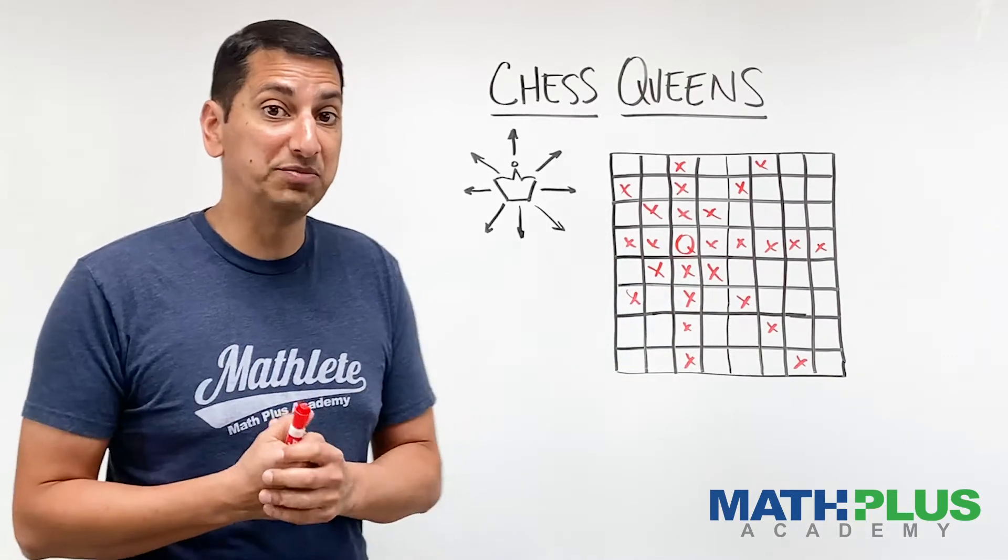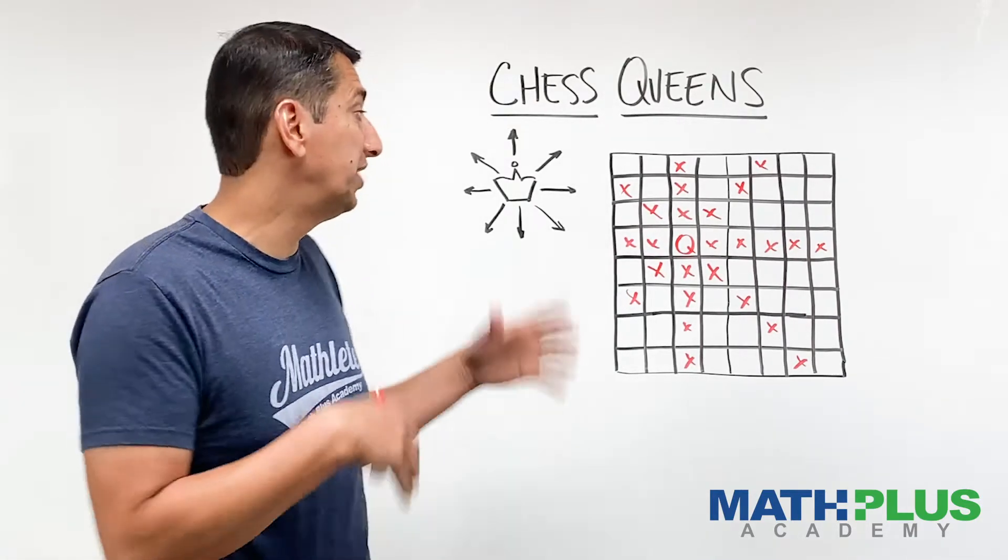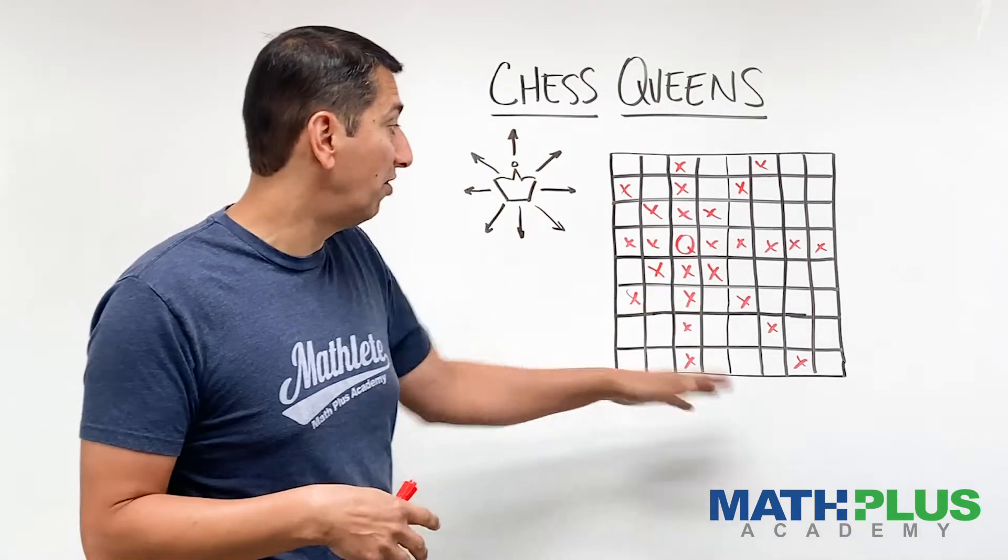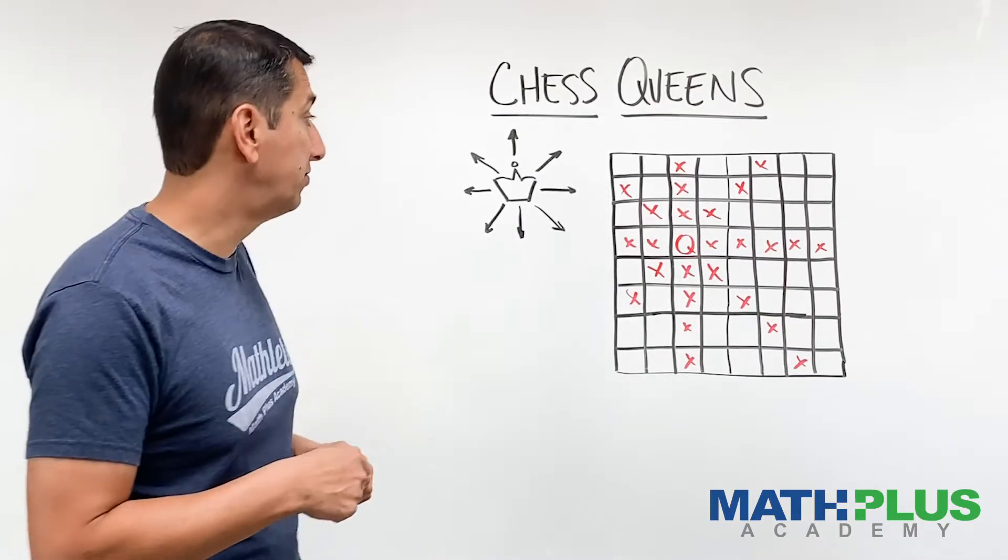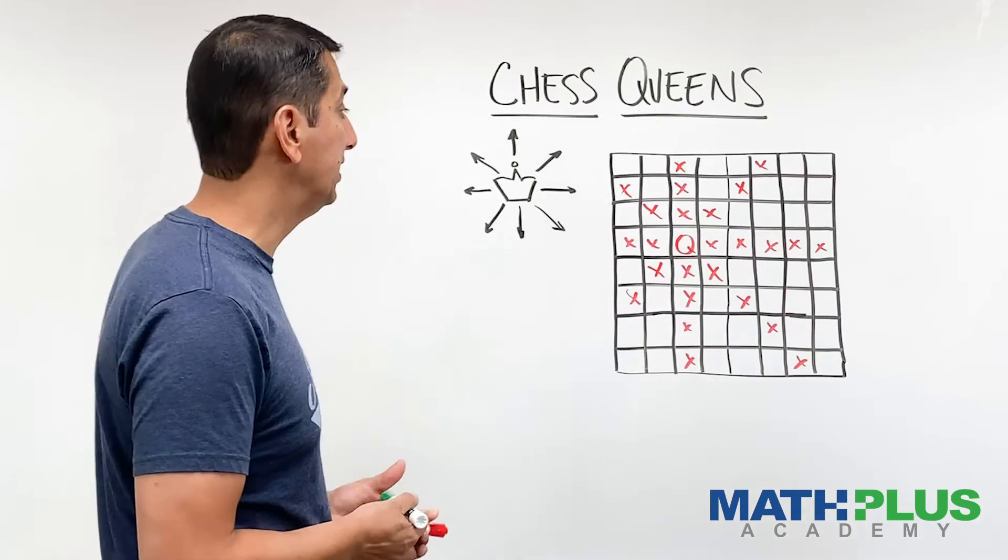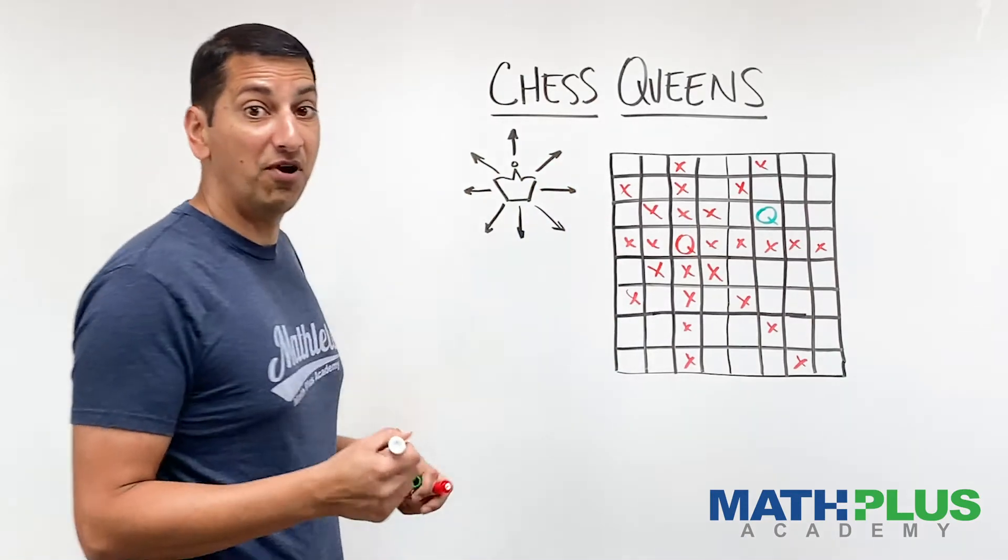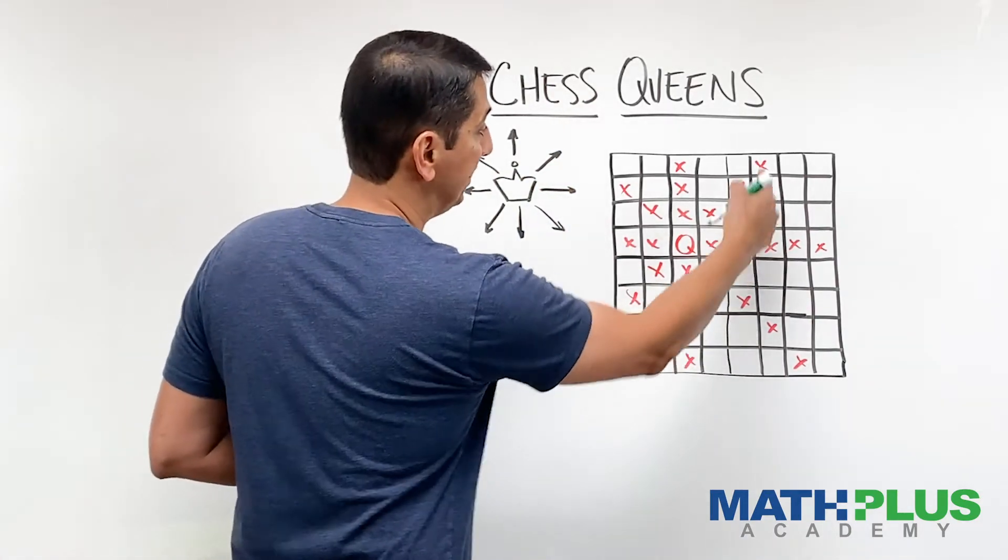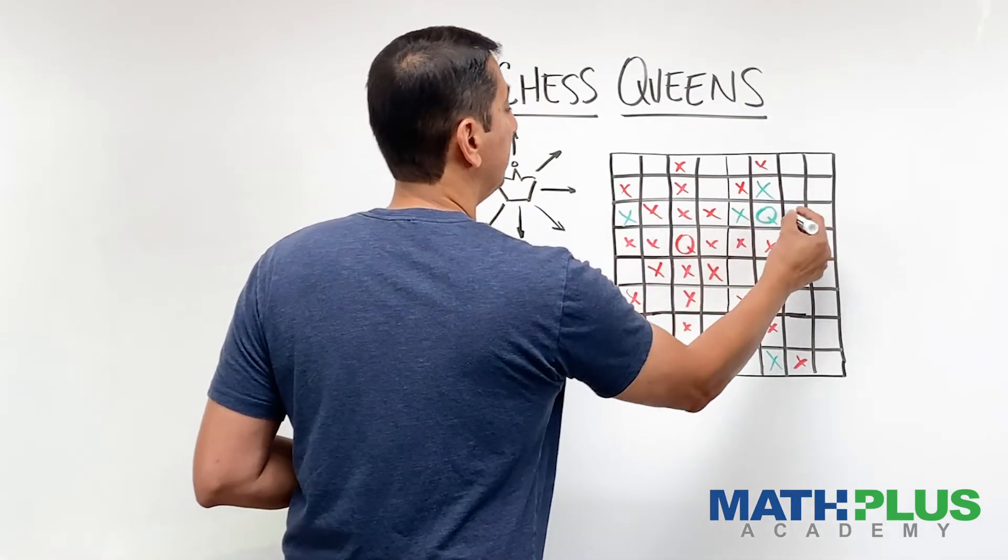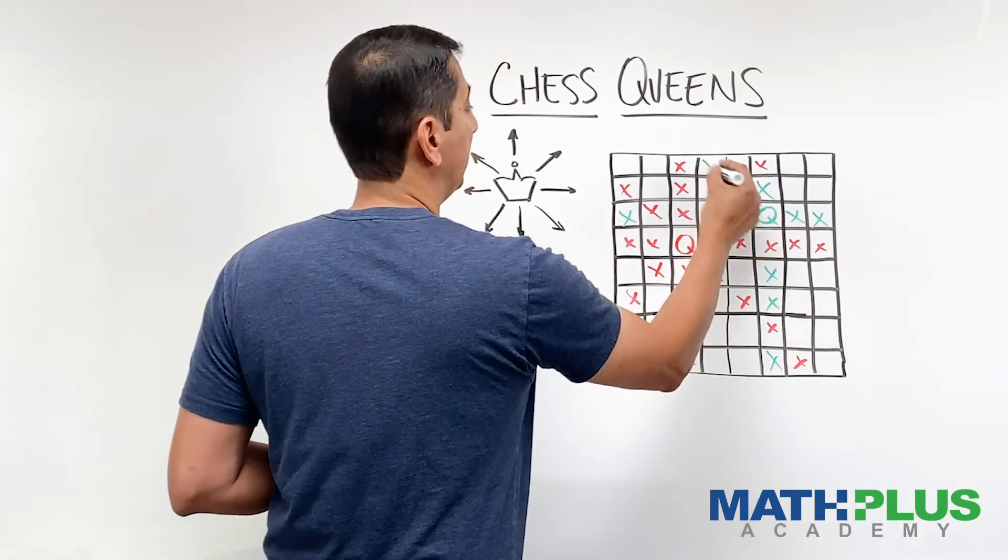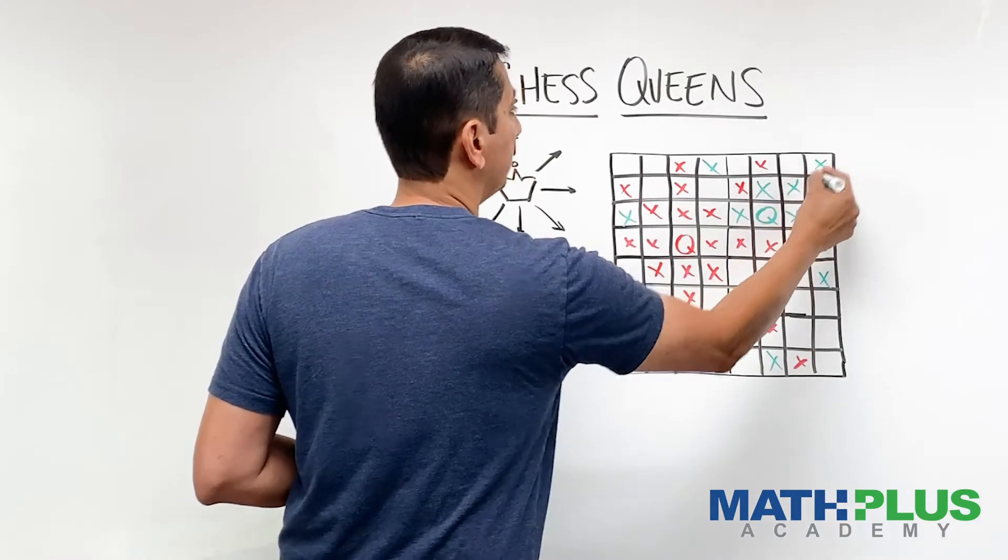Now, the challenge is going to be to start placing more and more queens on this board so they don't attack each other. So now that I've marked off all the places that this queen can see or can attack, I can try and place another queen. Maybe I'll put my second queen right here. And then I'll mark off all the squares that aren't marked off already that this queen can attack. So everything in this column, and the row, and the diagonal, like that.